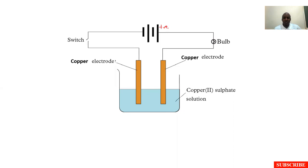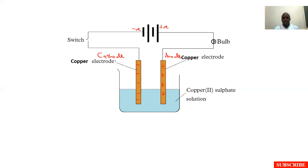So we have our positive terminal on this side and our negative terminal. Remember, the shortest stripe is the negative electrode. So when we close our switch, the electrode connected to the negative terminal will become our cathode. The other electrode, connected to the positive terminal, will be relatively positive compared to the cathode. This one will have more electrons, so it will be negatively charged. But remember, we still have copper sulfate solution.